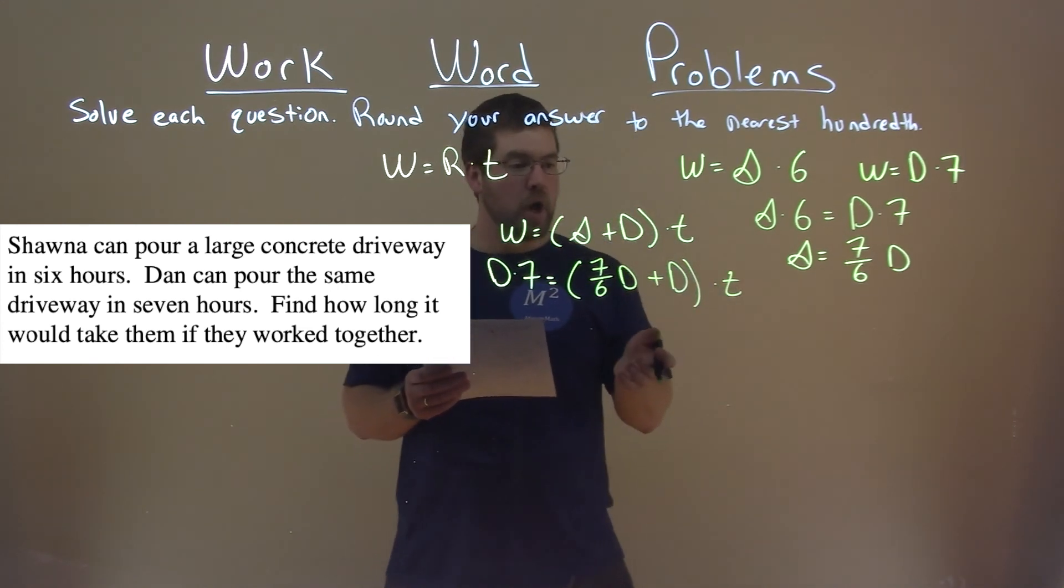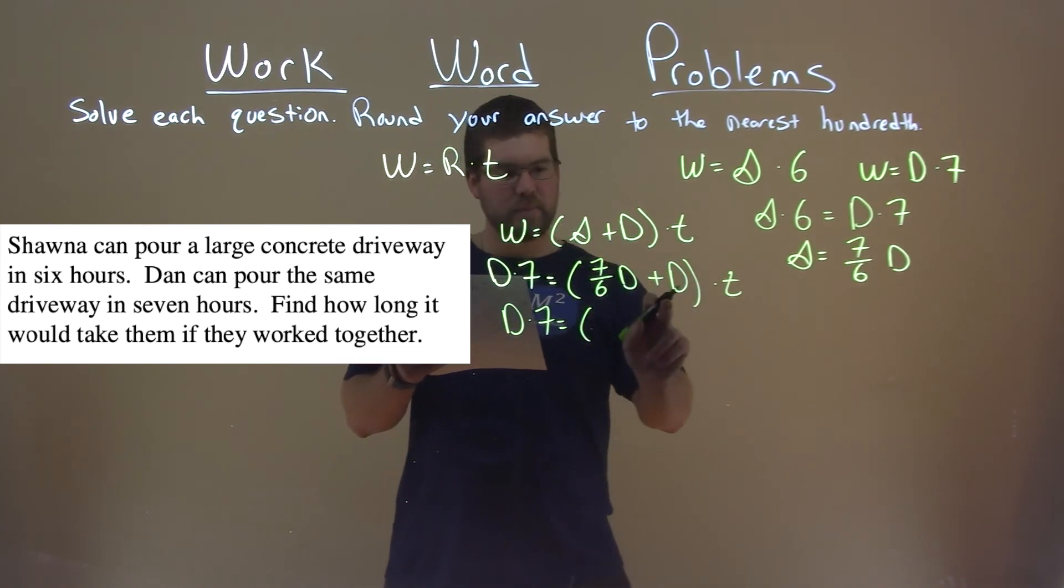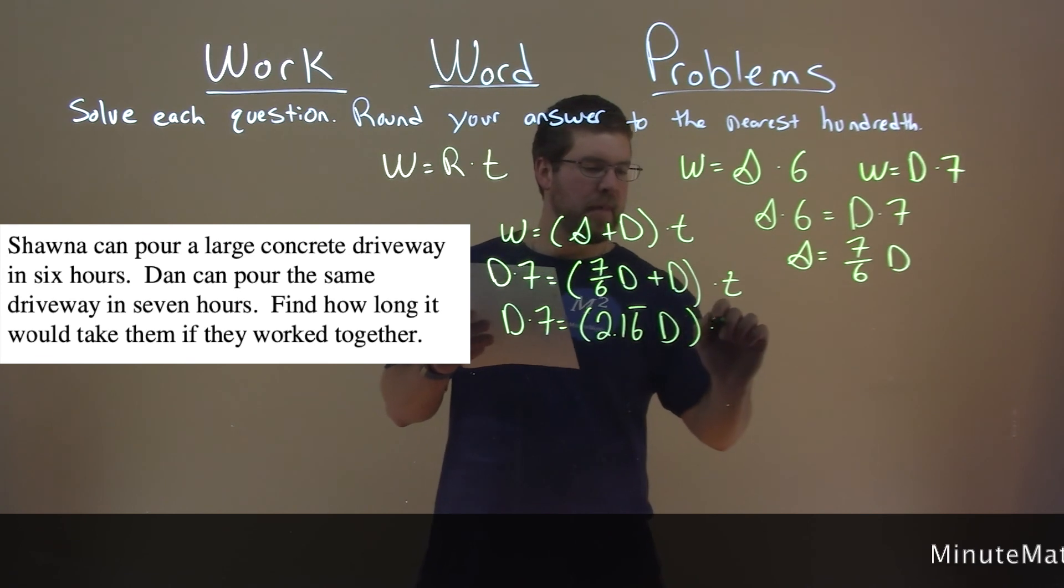Now, we want to solve for T, and this is going to be kind of nice. You'll see. D times seven over here, add these two together, and seven-sixths plus one is actually 2.16 repeating times Dan, and then times T.